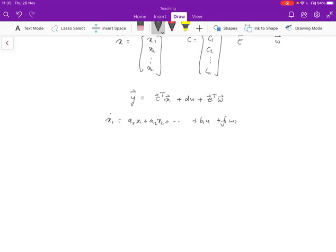X1 dot is equal to A11 X1 plus A12 X2 plus B1 U plus F1 W1. What are we saying here? We're saying that the evolution of the state value X, how it changes with time, is related to its own value in the past, X1, as well as all the other state variables, X2, et cetera, up to Xn.